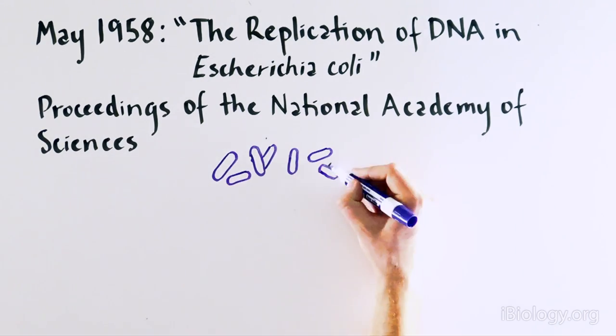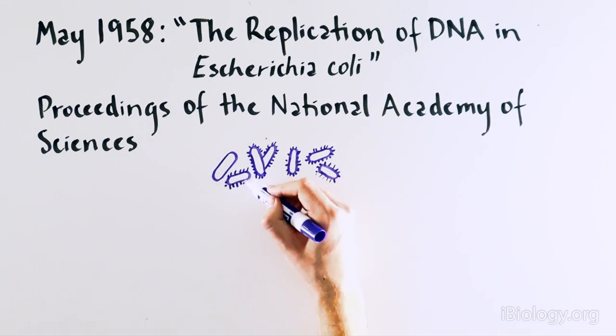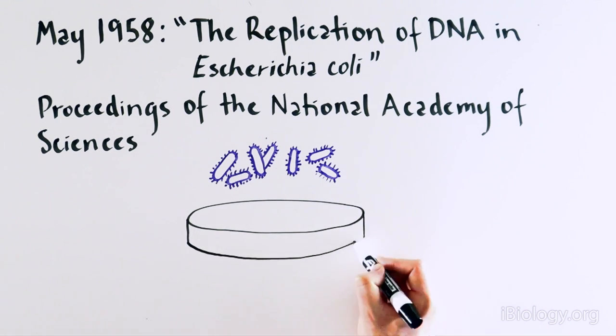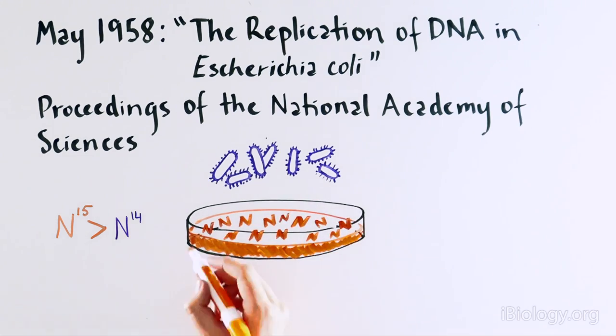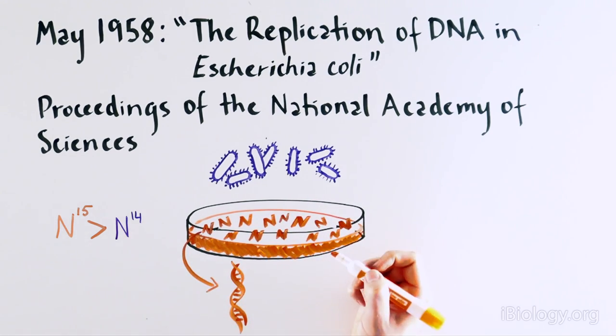These scientists used bacteria to answer the question of DNA replication, since it could be easily grown in the laboratory. They grew the cells in the presence of a specific type of nitrogen, which is found in DNA that would make all of the DNA very heavy.